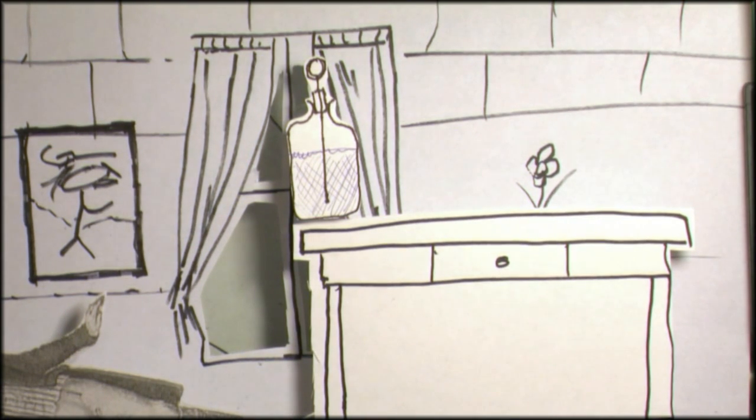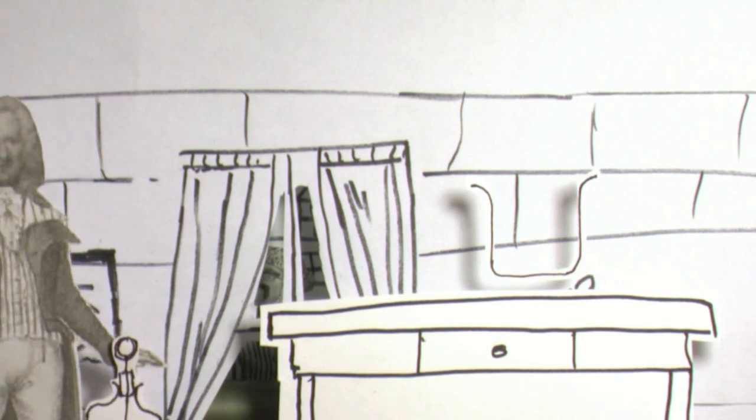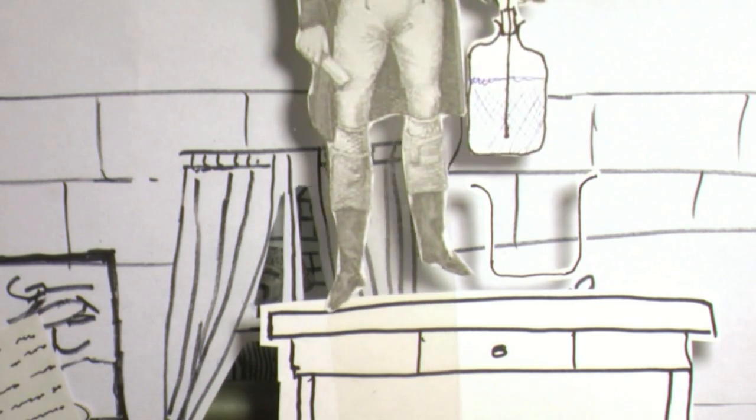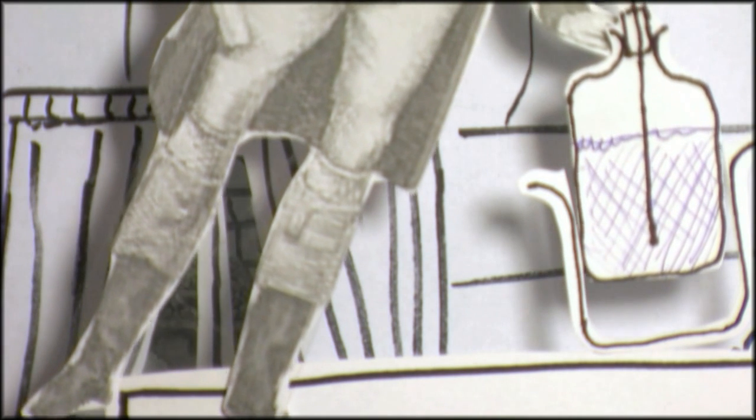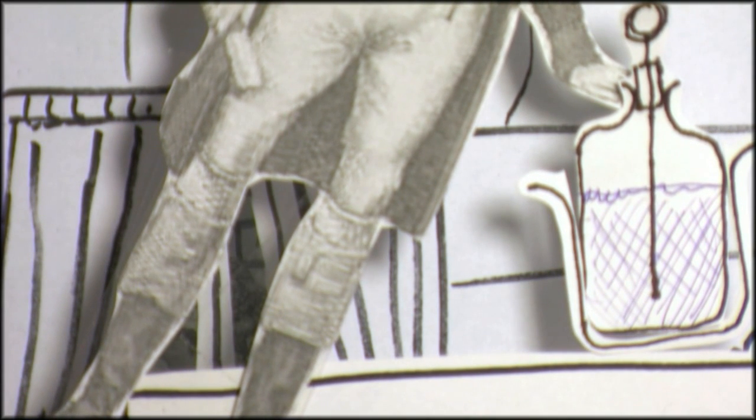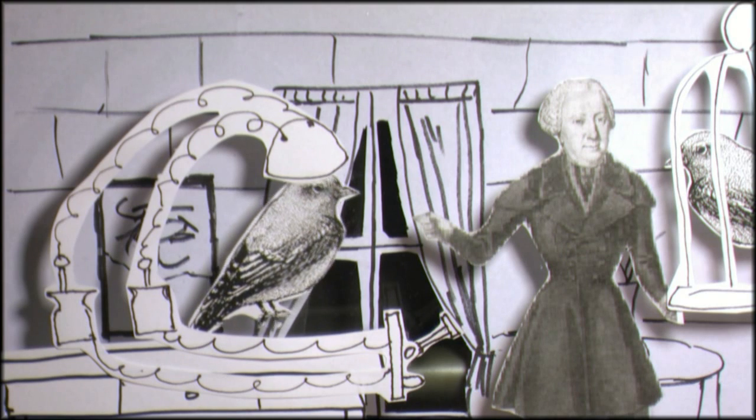After further experimenting, he found that metal on the outside of the jar could take place of his hand. Because of his reputation as a teacher, the science community took notice and his device was named the Leyden jar after the city in which he taught.